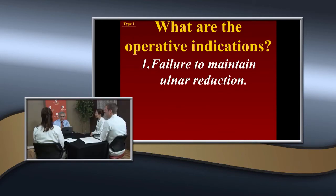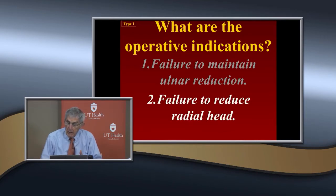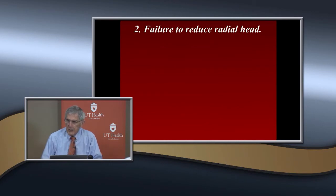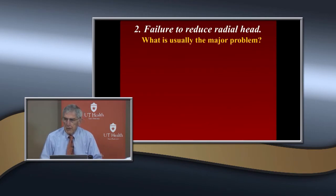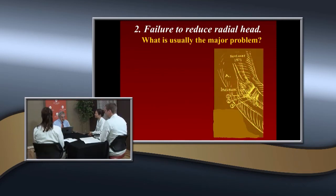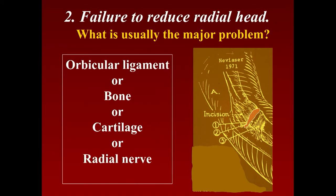The most common tissue preventing radial head reduction is the annular ligament. Other possibilities include bone fragments, cartilage, and there's one report of the radial nerve being interposed. For a patient with three failed closed reduction attempts where the ulna has been reduced, the next step is open reduction. An arthrogram can confirm interposed tissue — you can see the annular ligament interposed.